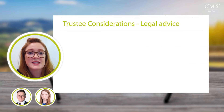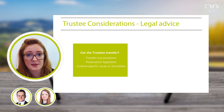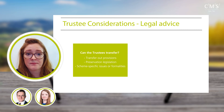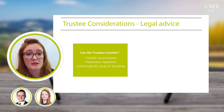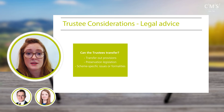Trustees need to consider whether they're technically able to transfer benefits, whether they should do so, and any issues that must be resolved beforehand. They must be satisfied they have the power under the scheme's provisions and relevant legislation to make the transfer. Transfer-out rules differ from scheme to scheme and can take the form of a company direction, a joint power between company and trustee, a sole trustee power, or the rules can be completely silent. Trustees need to identify who has the power, and amendments may be required if rules are silent or contain restrictions.